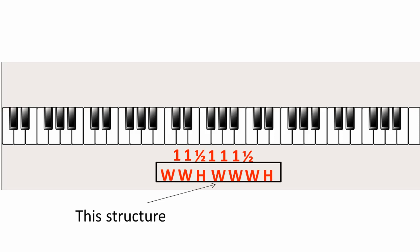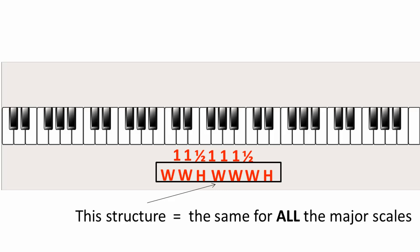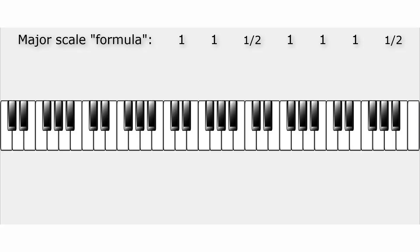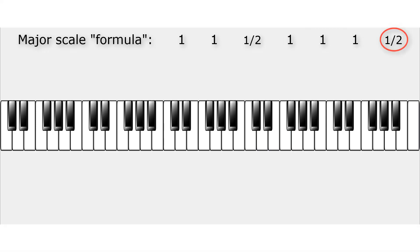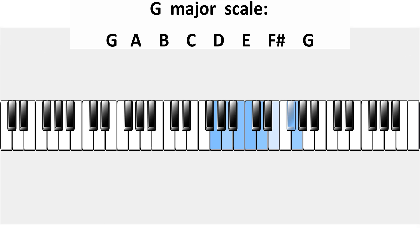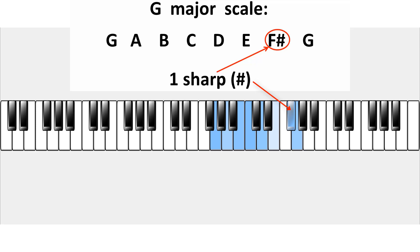We can use this formula to find all other major scales with a different root note. Let's apply this structure to find the G major scale. We start on G: one whole tone up to A, another whole tone up to B, a halftone up to C, a whole tone up to D, a whole tone up to E, another whole tone up to F-sharp, and finally a halftone to G. So this is the G major scale — you can see it has one sharp note, F-sharp. The C major scale had no sharps.